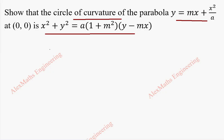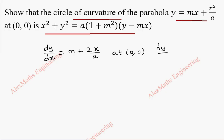For the first part, we are going to find dy by dx. dy by dx for the given curve is the differentiation of mx, which is m, plus x squared by a differentiation is 2x by a. Now we have to find this at the origin (0, 0). So this gives dy by dx as m, because when we substitute x as 0, the second part is 0. So dy by dx is m.